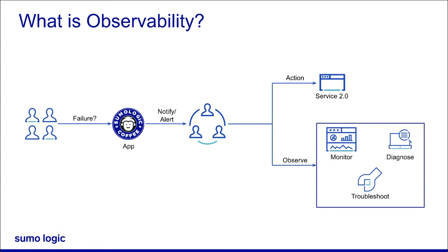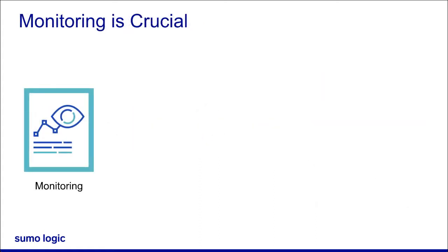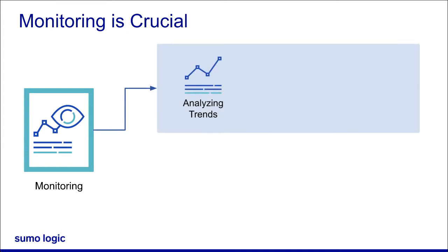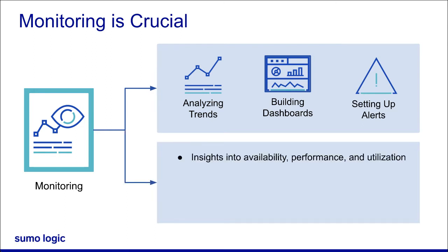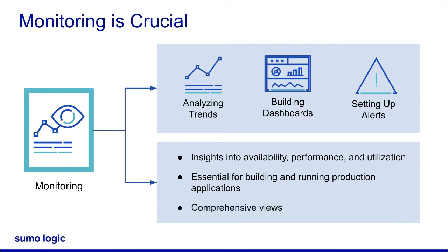But don't we have a monitoring system for all that? Of course. Monitoring is an important part of observability for analyzing long-term trends, building dashboards, and setting up alerts. With monitoring, you know how your apps are functioning in terms of both growth and resource utilization. Monitoring is an essential tool for building and running applications and can provide comprehensive views of your system's health.